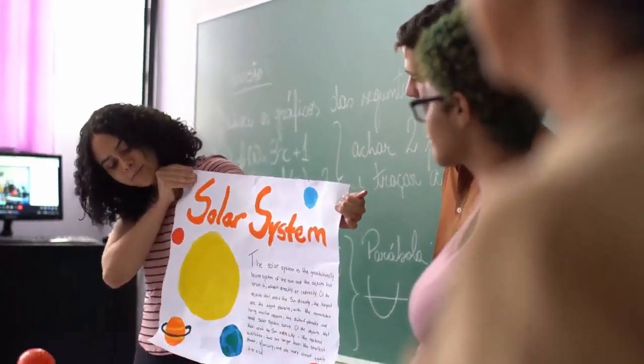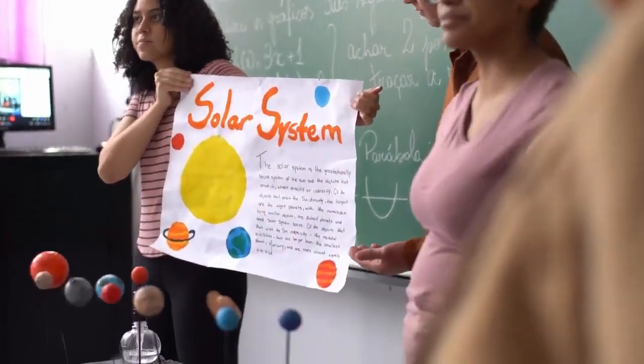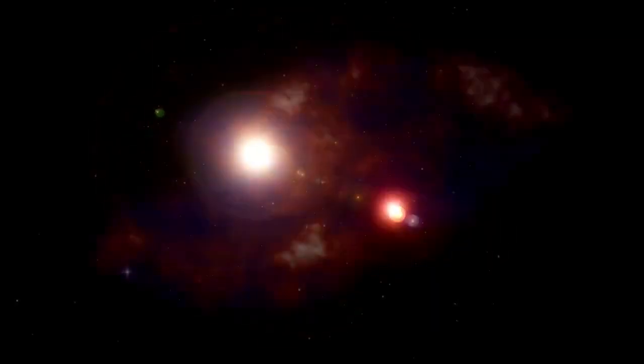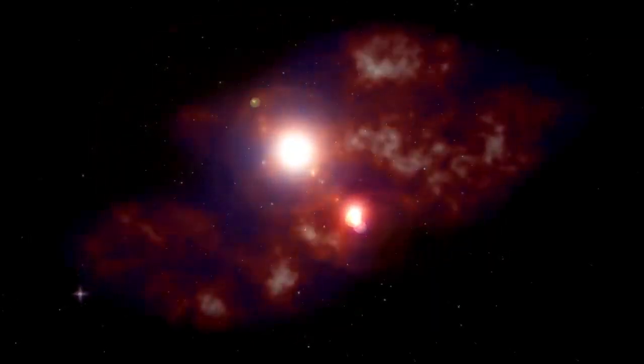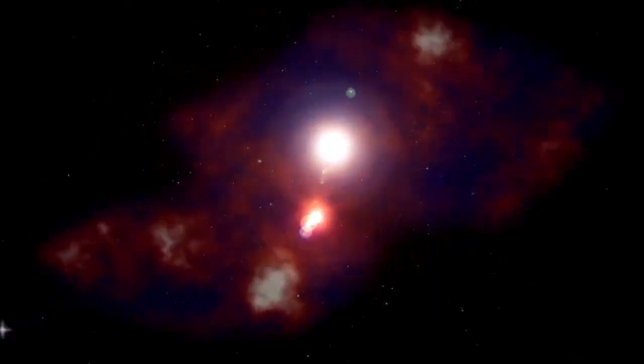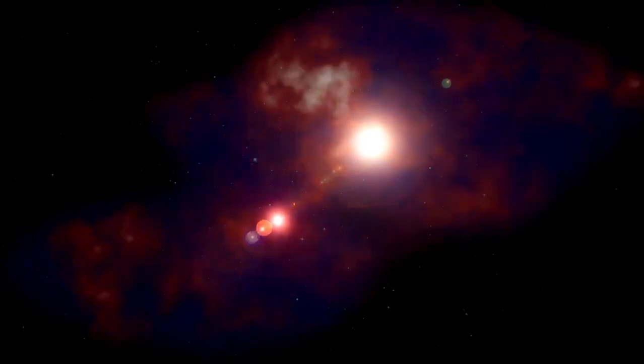What makes Proxima b particularly intriguing is its location within the habitable zone of its star, the region where temperatures could allow for the existence of liquid water on a planet's surface, a crucial ingredient for life as we know it.